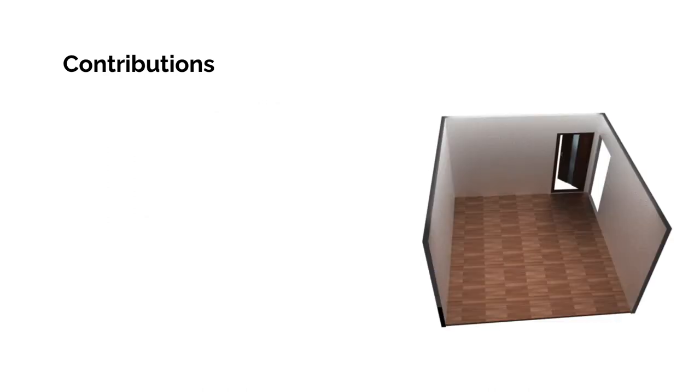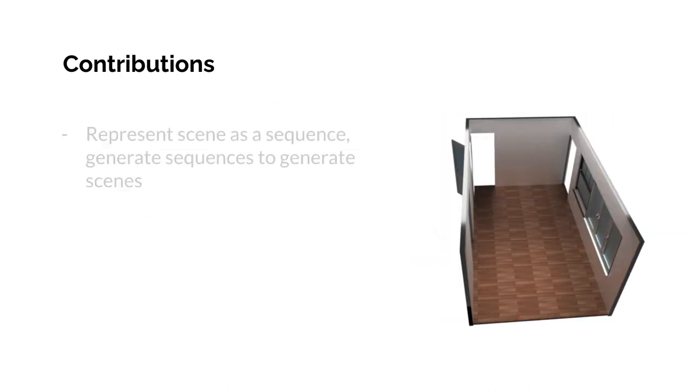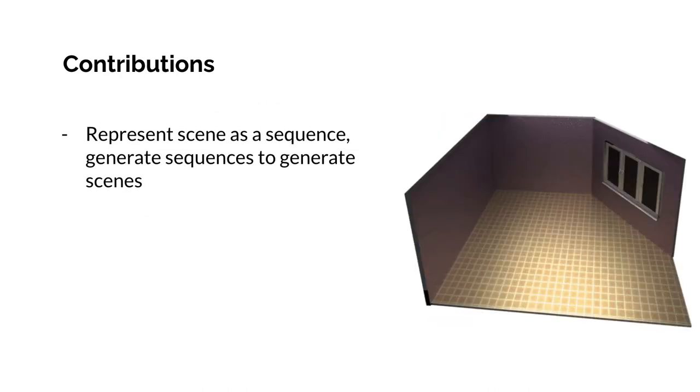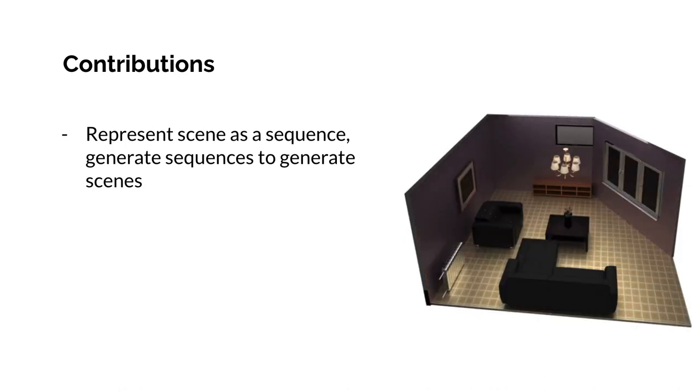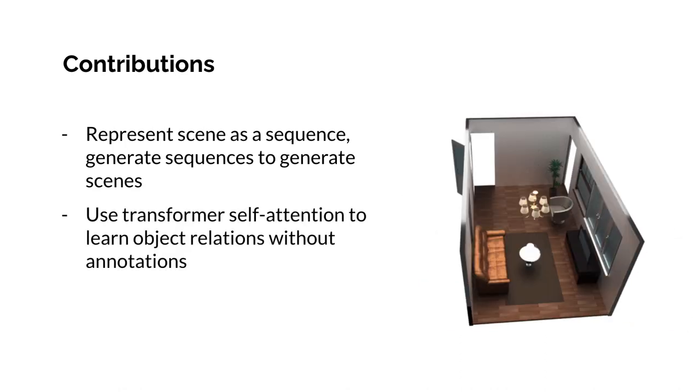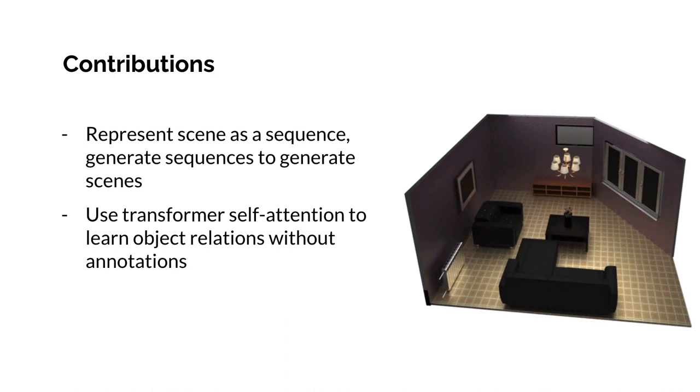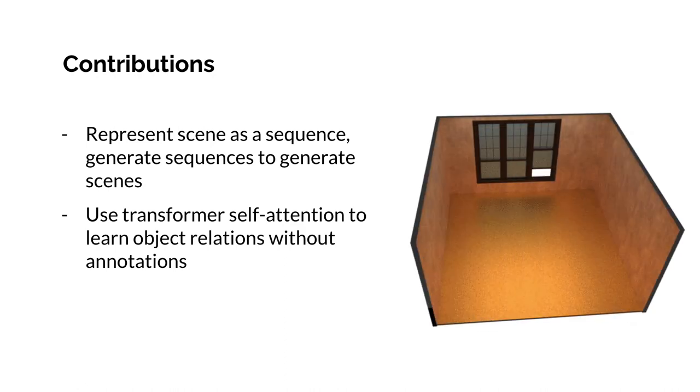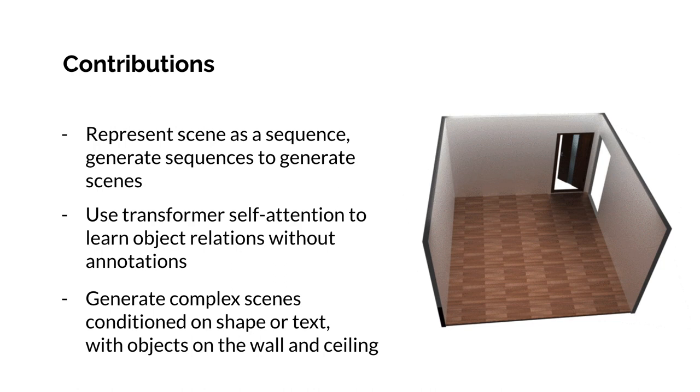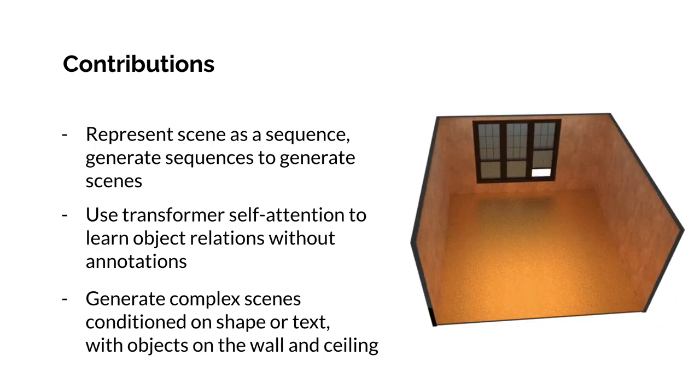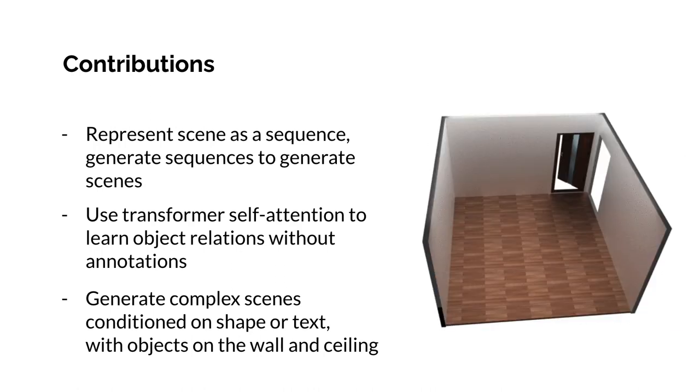In summary, we propose to represent a 3D scene as a sequence of objects and generate new scenes by generating these object sequences. We leverage the self-attention mechanism of transformers to learn implicit relations between objects. And we can generate scenes conditioned on a room layout or text description, creating various diverse and realistic 3D scenes.